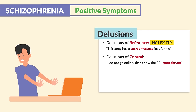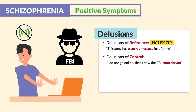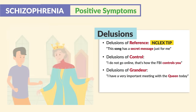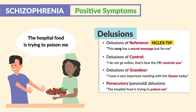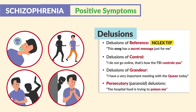And delusions of control — a client might state, 'I do not go online. That's how the FBI controls you.' Or delusions of grandeur: 'I have a very important meeting with the queen today.' And lastly, persecutory or paranoid delusions: 'The hospital food is trying to poison me.' The client believes that they're being persecuted — for example, being poisoned, followed, attacked, or even spied on.